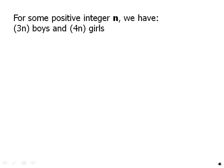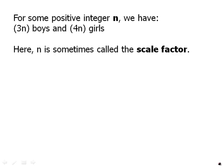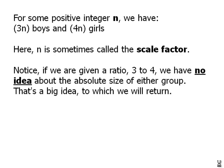For some positive integer n, we definitely have 3n boys and 4n girls. We can definitely say that if we're given a 3 to 4 ratio. Here, n is sometimes called the scale factor. Notice, once again, if we're given a ratio of 3 to 4, we have no idea about the absolute size of either group. That's a big idea to which we will return.